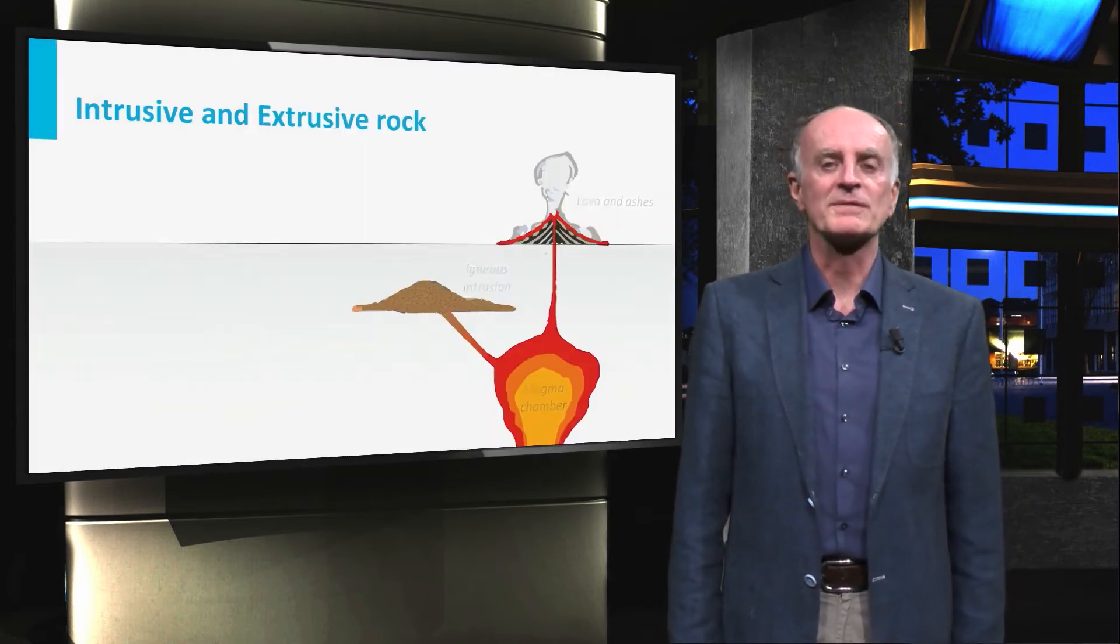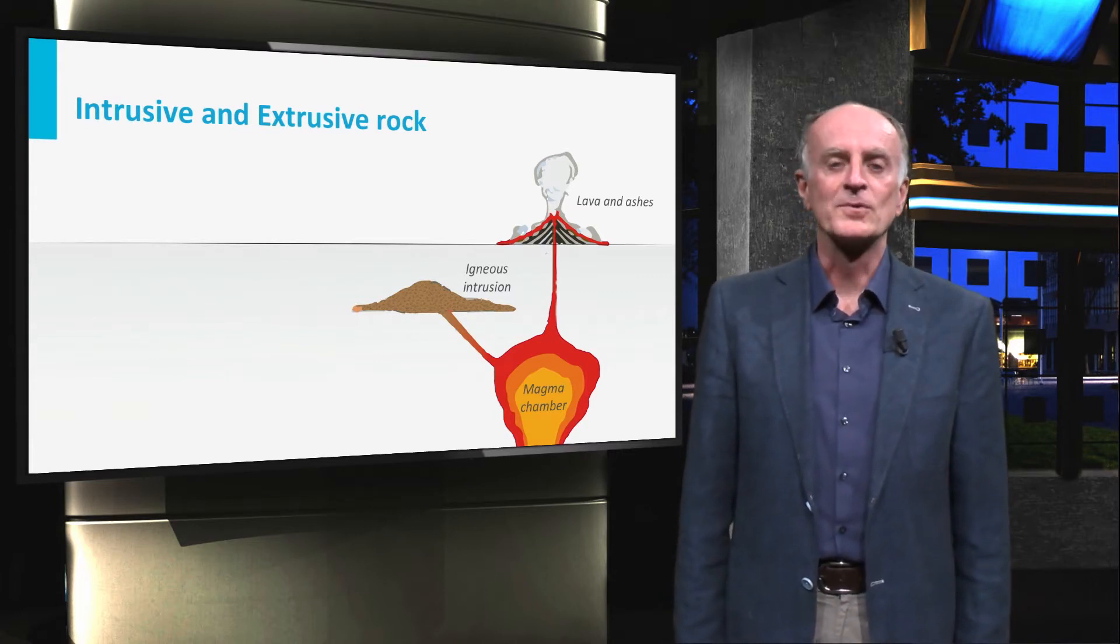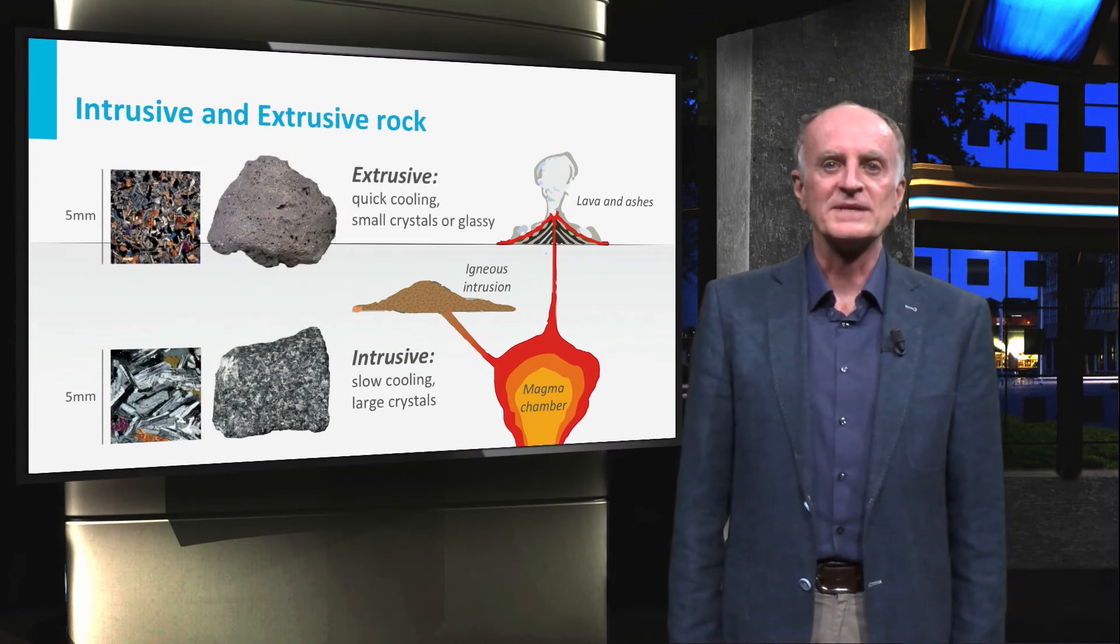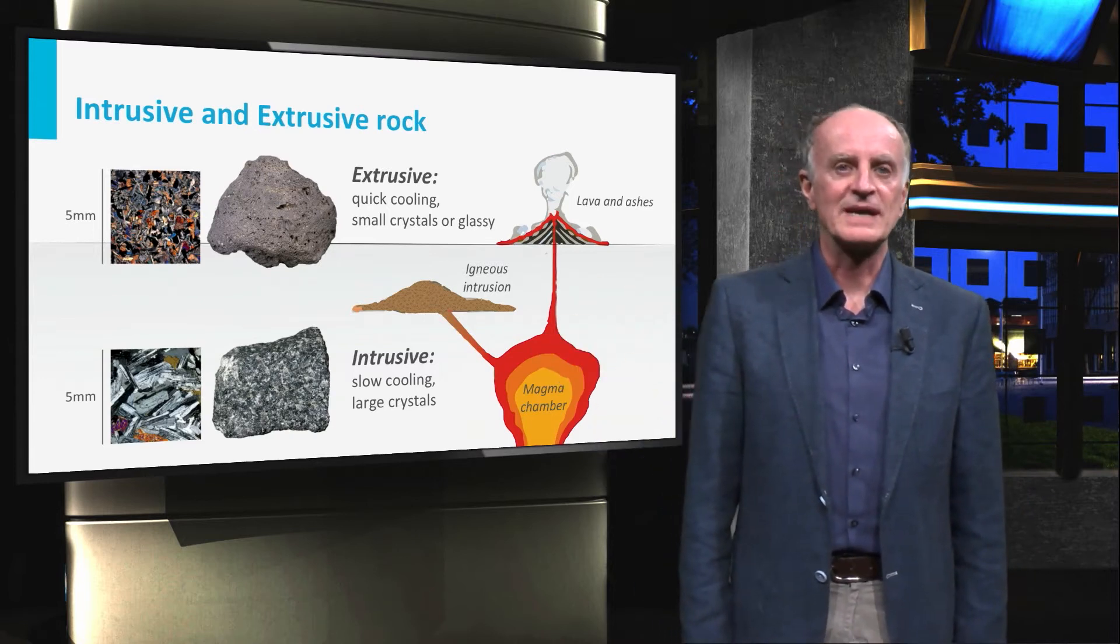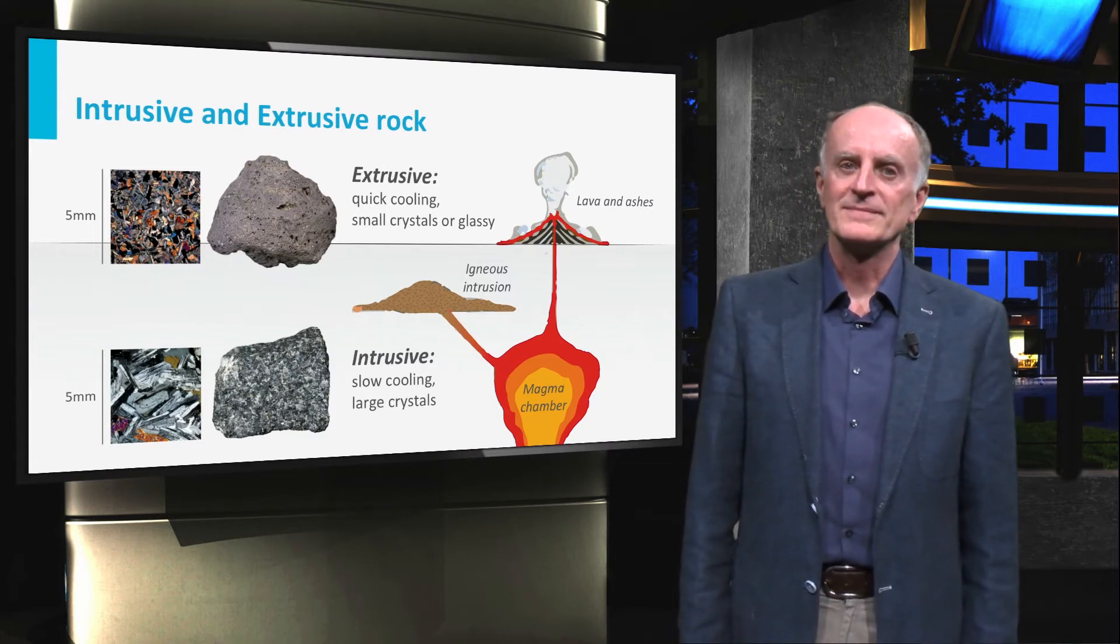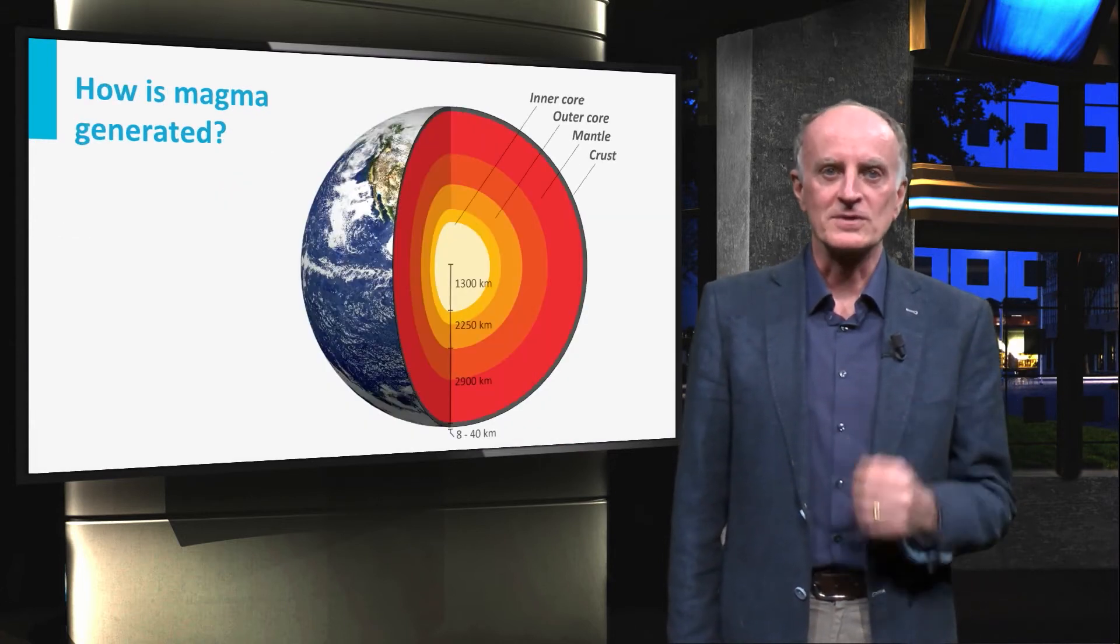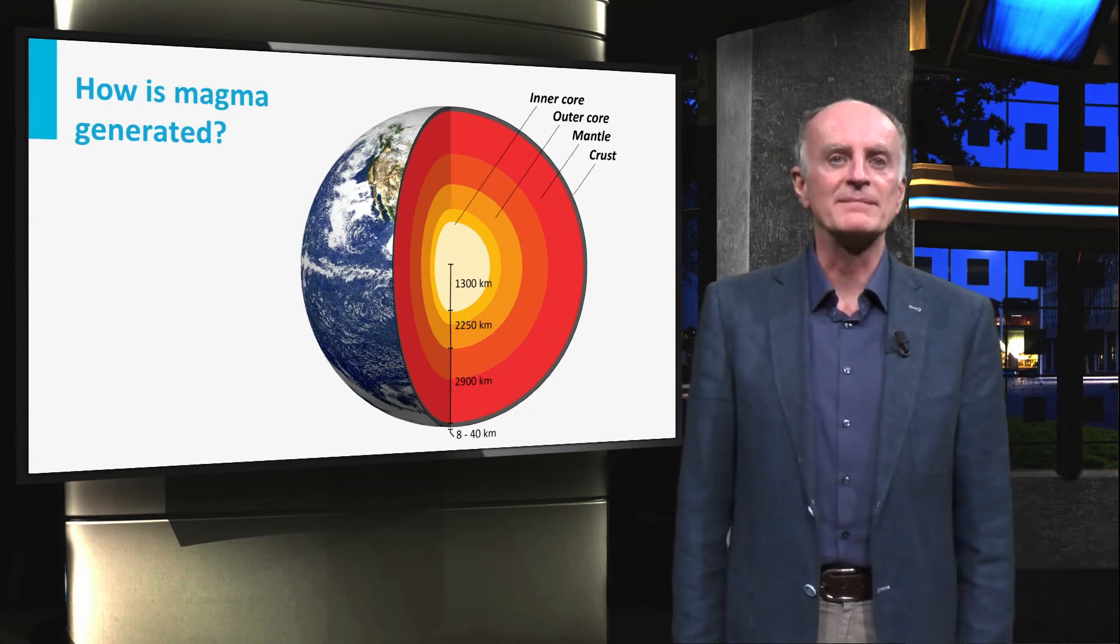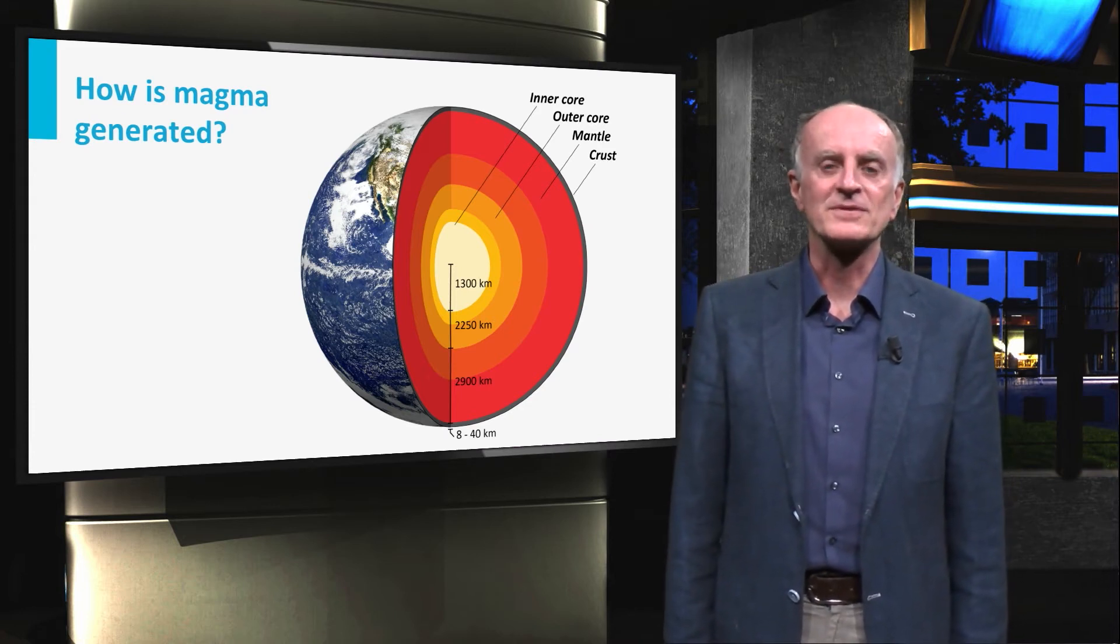We will start our journey with magmatic rocks, which form from the consolidation of magma at depth or at the surface of the Earth. These two types of rocks are very different and are named intrusive and extrusive. Where does the magma come from? The answer to this question is not obvious as practically all rocks of the outer 3000 kilometers of the Earth are solid. How is this generated? We will need a bit of physics and chemistry for this part of the journey.